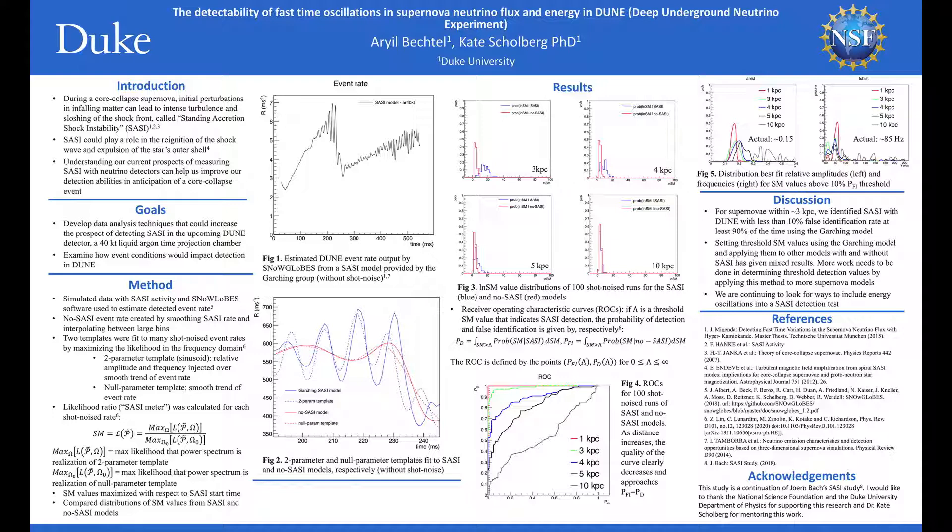The DUNE detector is an upcoming 40-kiloton liquid argon neutrino detector in South Dakota. The goals of this study are to find data analysis techniques that can improve our chances of detecting SASI in DUNE, as well as examine how supernova event conditions would impact detection prospects.